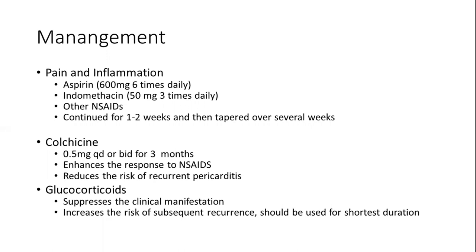In addition to NSAIDs, colchicine should be used — either as a once-daily or twice-daily dose for three months. The benefit of colchicine is that it enhances the response to NSAIDs to suppress inflammation and also reduces the risk of recurrent pericarditis. If a patient is not responding to NSAIDs or colchicine, we can start glucocorticoids. However, glucocorticoids should be used cautiously, tapered rapidly, and used for the shortest duration possible, as improper tapering increases the risk of recurrence.